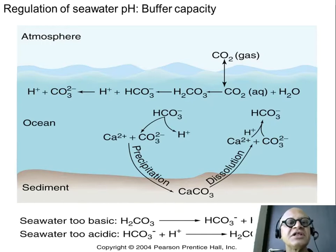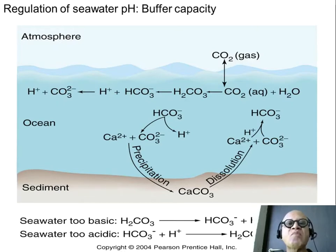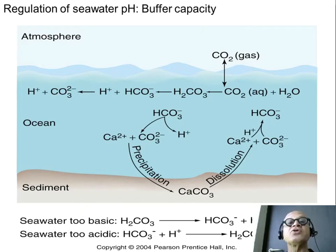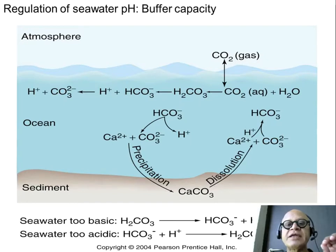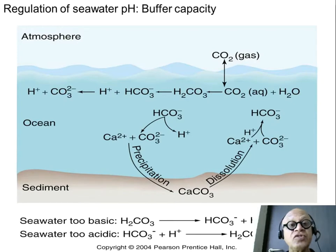Let's add a little bit more detail on the regulation of seawater pH and buffer capacity. Why is this important? Because we keep increasing CO2 because of human activities. We want to know whether the ocean's buffering capacity will continue to be as high as it has been, or whether it will become less buffered and begin to acidify. These equations are a little complicated, so I'll come back to them in the next module. But the ocean is buffered — it's a good thing.